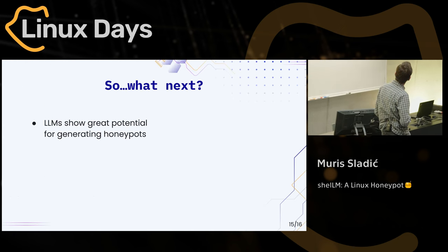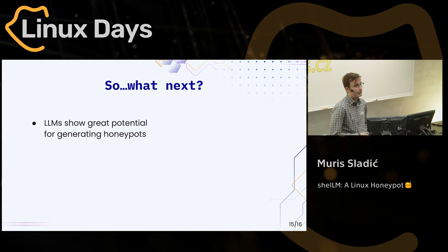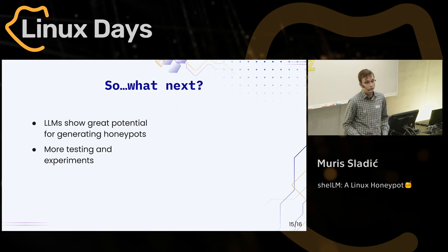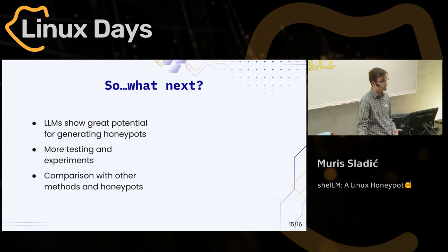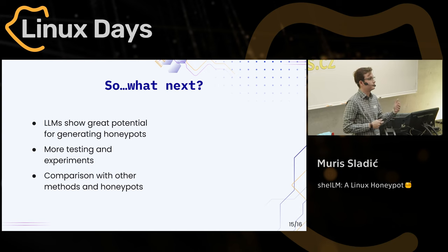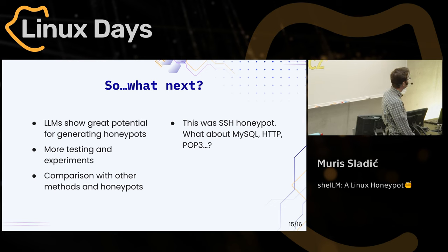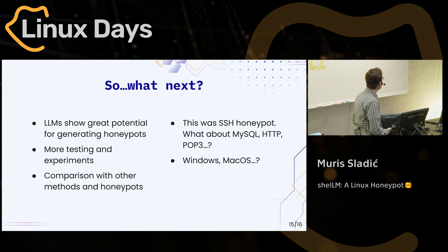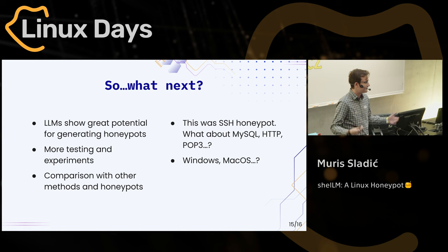Conclusions: LLMs show great potential, there's still a lot of work to be done here, but it's a good first step and a nice proof-of-concept research. We plan to do more testing and experiments with people — like A-B testing where they don't know they are in a honeypot — also testing our method against other methods like Cowrie, to check if bots or human attackers would stay longer in our honeypots. And of course, this was an SSH honeypot, but what about MySQL, HTTP, POP3, other protocols — or this was a Linux honeypot, but what about other operating systems? It's a very broad area and very interesting.